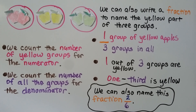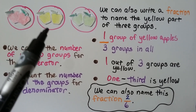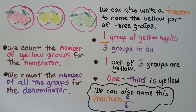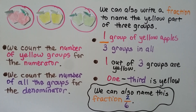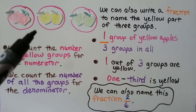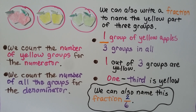We can also write a fraction to name the yellow part of three groups. Here we have three groups of apples and one group is yellow. We can say one group of yellow apples out of three groups in all — that's one third. One out of three groups are yellow. We count the number of yellow groups — one — as our numerator, and the number of all groups — three — as our denominator. We can also name this fraction two sixths.